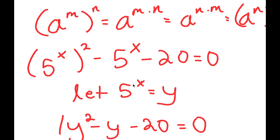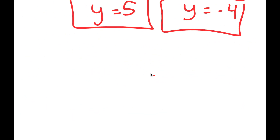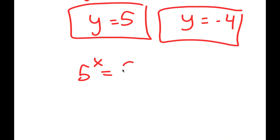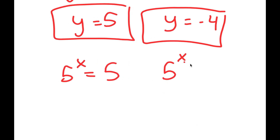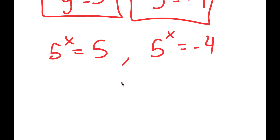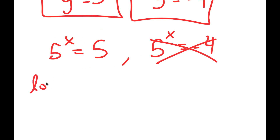Now, from here, remember how we let 5 to the power of x equal y. So this means I get two equations: 5 to the power of x equals 5, and 5 to the power of x equals negative 4. Well, we can't take the power of a positive number and get a negative result, so that equation has no solution. For 5 to the power of x equals 5, we can see directly that 5 to the power of 1 equals 5, because anything to the power of 1 is itself. So x equals 1 is my solution.